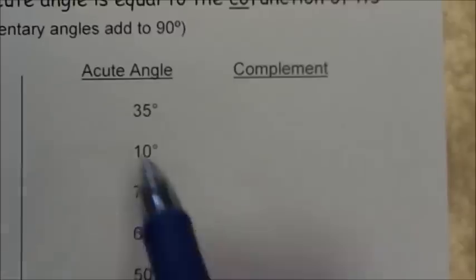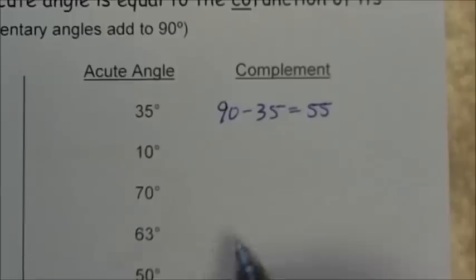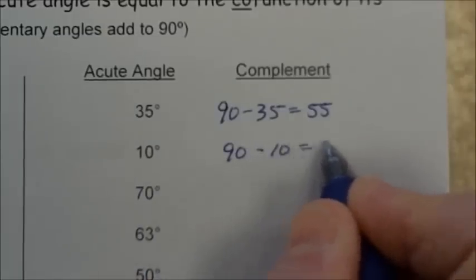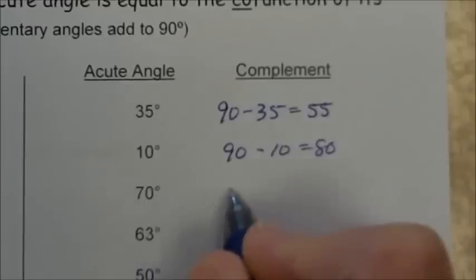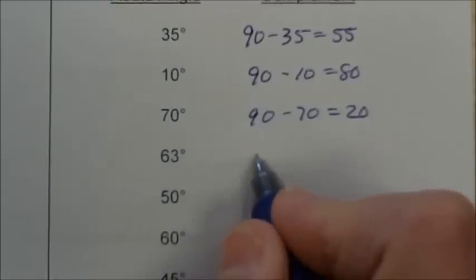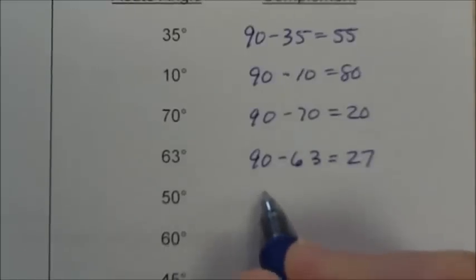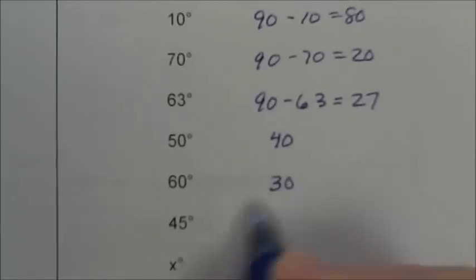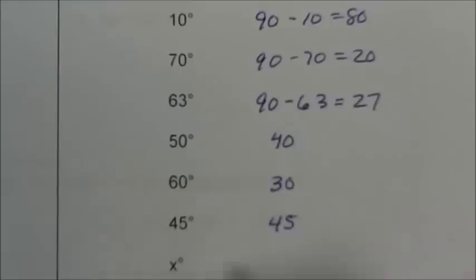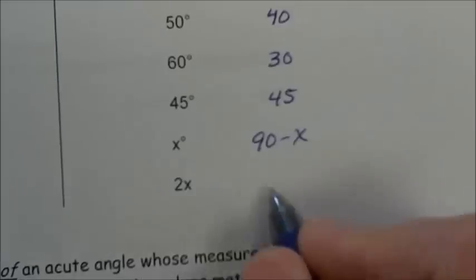Complementary angles add to 90 degrees. The complement of 35 degrees: 90 minus 35 is 55. Complement of 10: 80. Complement of 70: 20. Complement of 63: 90 minus 63 is 27. Complement of 50: 40. Complement of 60: 30. Complement of 45: 45. The complement of x is 90 minus x. The complement of 2x is 90 minus 2x.